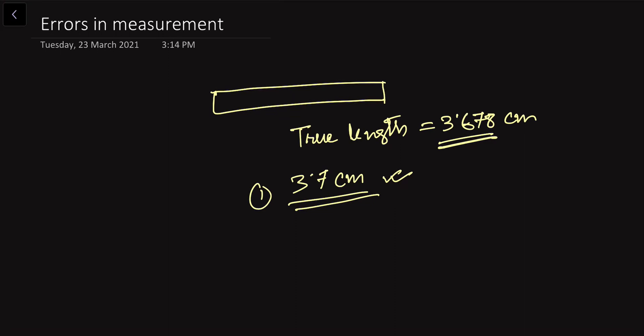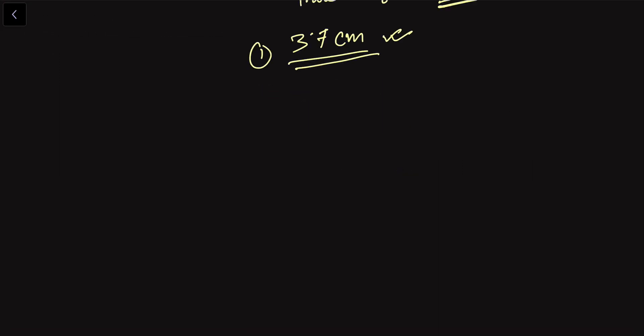In any measurement, the result contains some uncertainty, and this uncertainty is called the error. There are two types of errors that can occur in any measurement: the first is systematic error, and the second is random error.